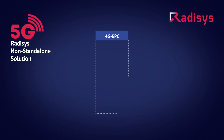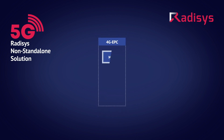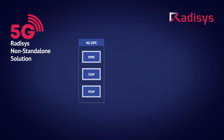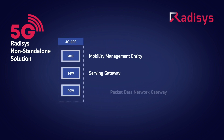Let's look at the setup first. The Radisys 4G EPC network includes the following 3GPP compliant nodes: Mobility Management Entity, Serving Gateway, and PDN Gateway.